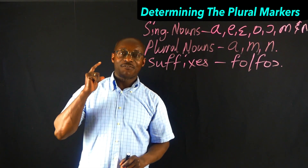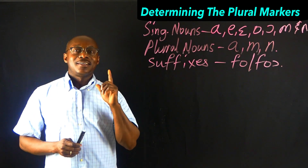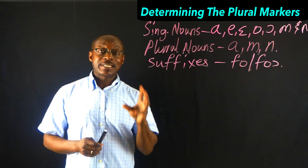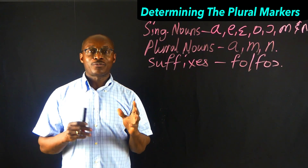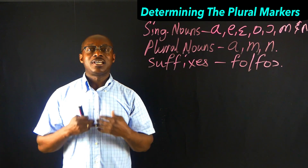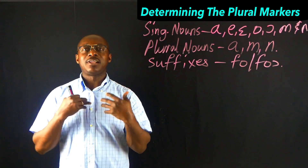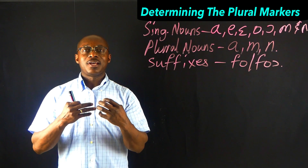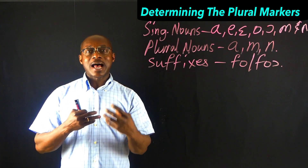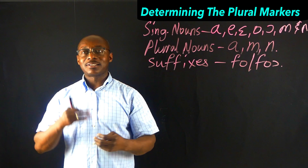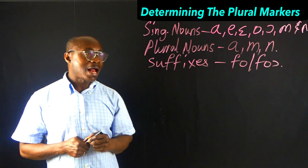Point number four: some nouns, especially the kinship nouns — when we talk of kinship nouns, we talk of people that we have some relations with, blood relations with. So it could be family members like our mother, our siblings, our uncles, auntie, and so on and so forth. Kinship nouns.